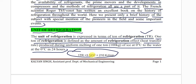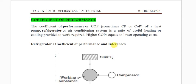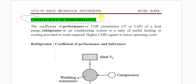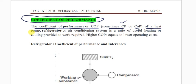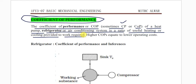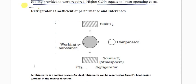One tonne of refrigeration is equal to 3.5 kilowatts or 210 kJ per minute. Next is the coefficient of performance. The coefficient of performance, COP, of a heat pump, refrigerator or air conditioning system is the ratio of the useful effect — heating effect or cooling effect — provided to the work required. Higher COP equates to lower operating cost.